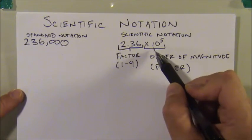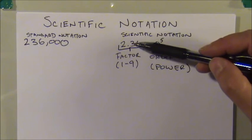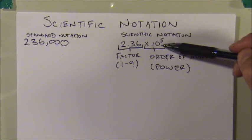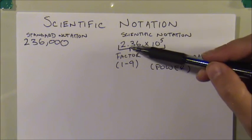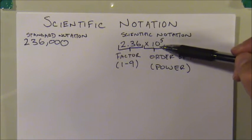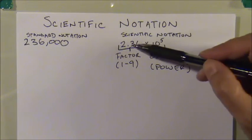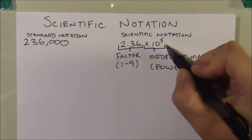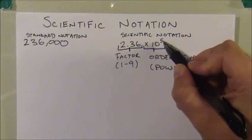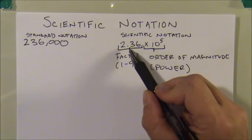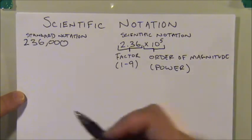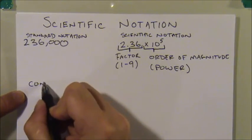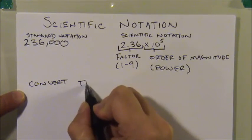The factor and the order of magnitude always work in opposite directions. If the factor made the number smaller, the order of magnitude makes it bigger, and vice versa. The exponent on the power of ten is always equal to the number of decimal places you move to put the number back into standard notation. Let's look at a few conversion examples.